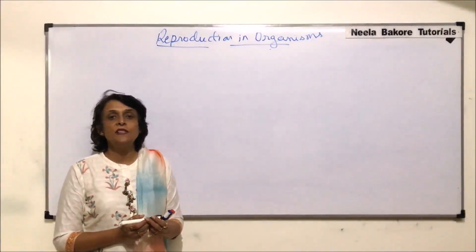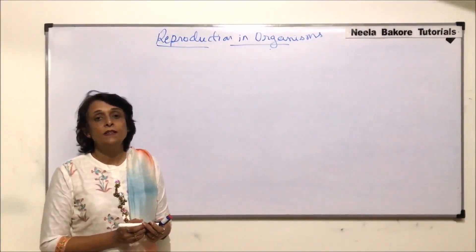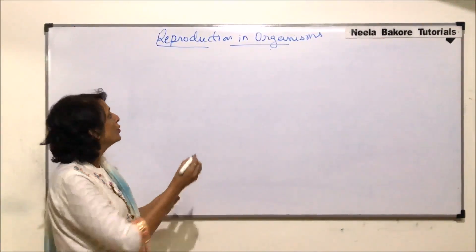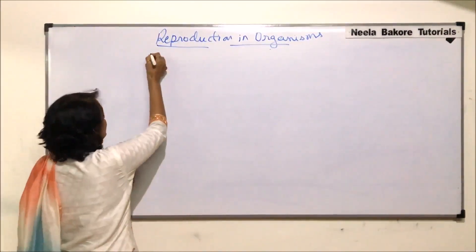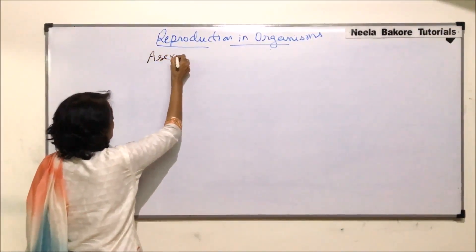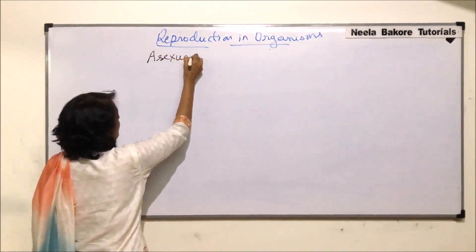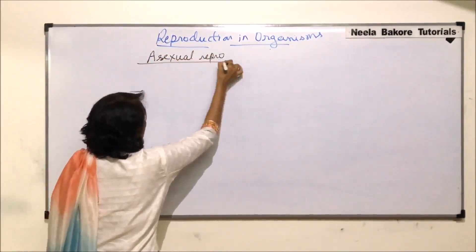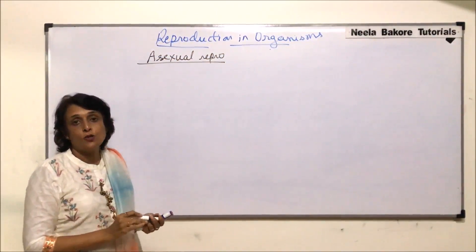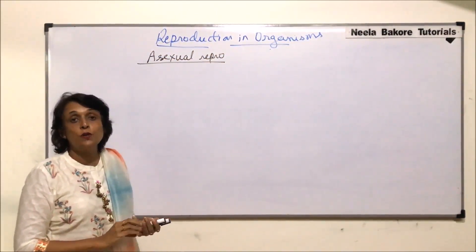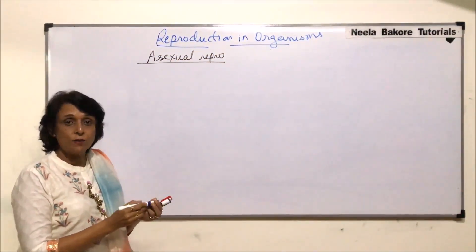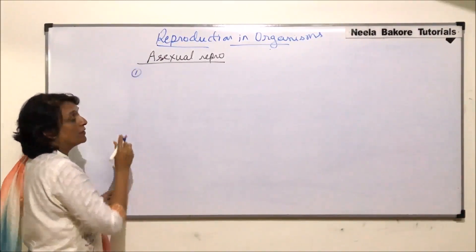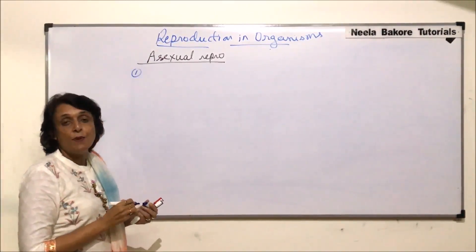In this part we will take up the various methods by which asexual reproduction takes place. We already know asexual reproduction would involve only one organism or one parent.